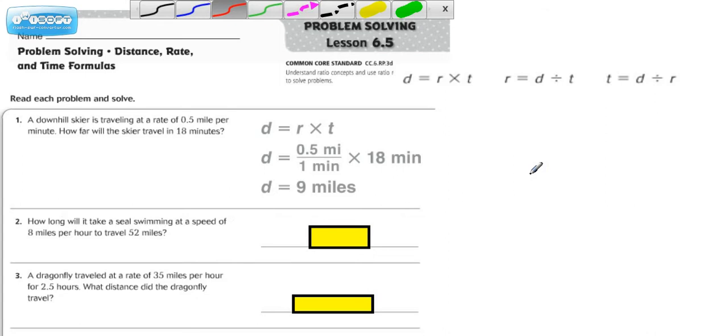The other thing that I want to point out is whenever they give you a rate, you want to write it in this way. You want to put it as a fraction, and make sure you include the two units. And the reason why is because it'll be more evident about canceling out units, so that you'll be able to tell that the answer here is going to be in miles.